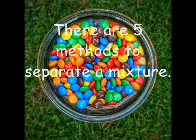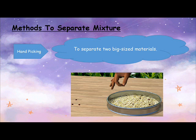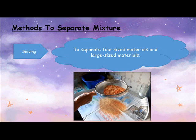There are five methods to separate a mixture. First is hand picking, to separate two big size materials. Second is sieving, to separate fine size materials and large size materials.